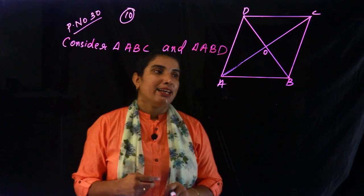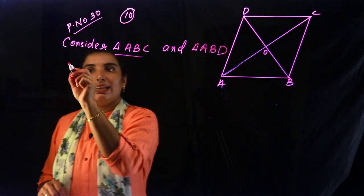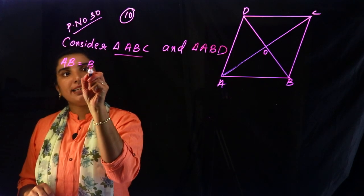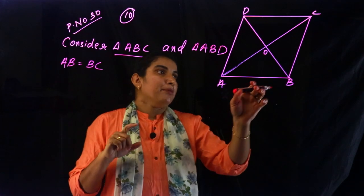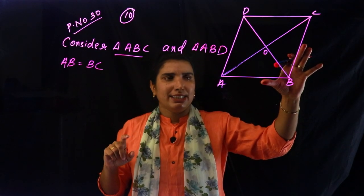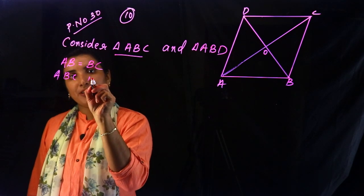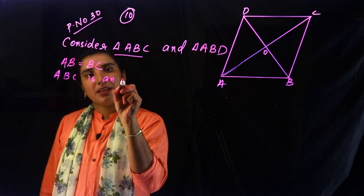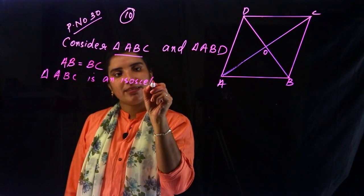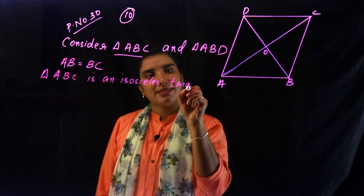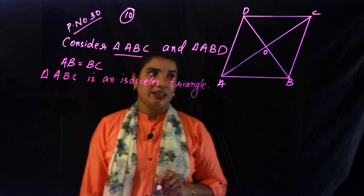Now look at triangle ABC. AB is equal to BC because all sides are equal. AB and BC are equal, so triangle ABC is an isosceles triangle.